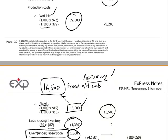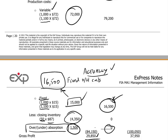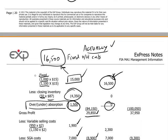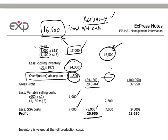In year two, notice that we produce 1,100 units, which corresponds to the normal production level for the factory. Therefore, 1,100 times $15 per unit actually fully absorbs the total actually incurred fixed production overheads — and therefore there is no over or under absorption occurring in year two. The rest is straightforward: calculate gross profit and the final profit figure, and make sure the numbers work.